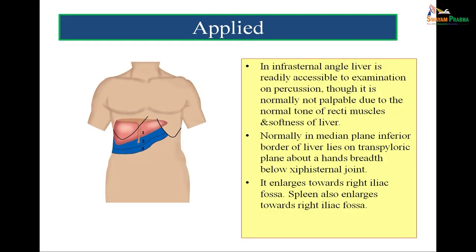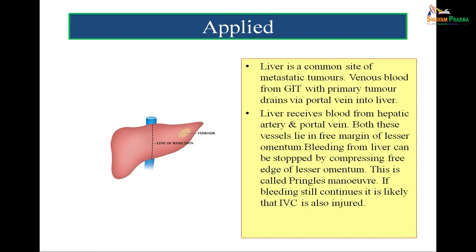The lower border of the liver normally lies below the costal margin, approximately a hand's breadth below the xiphisternal joint. We are not able to feel it normally because of the normal tone of the recti muscles and the softness of the liver. In pathological conditions, the liver may enlarge and when it does, the enlargement is towards the right iliac fossa.